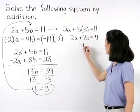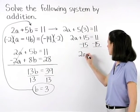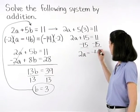Subtracting 15 from both sides, we have 2a equals negative 4.